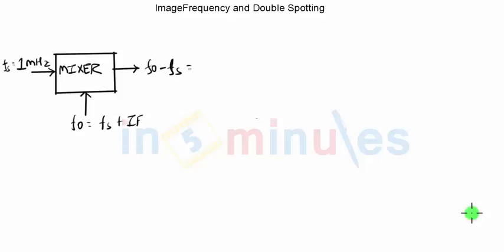This was done so that the operation of the receiver is at constant and low frequency, which helps us to overcome all the drawbacks of tuned radio frequency receiver. Now let us try to understand what is image frequency in superheterodyne receiver.